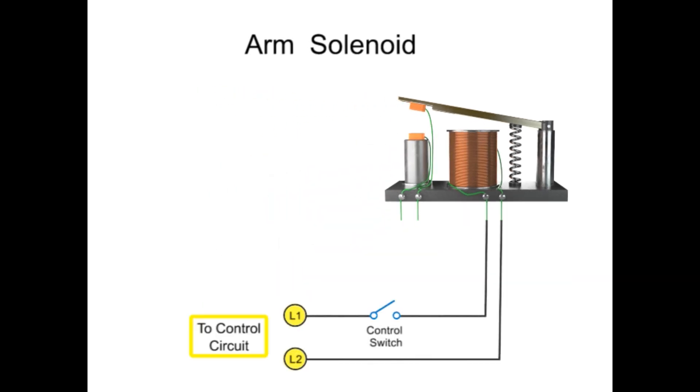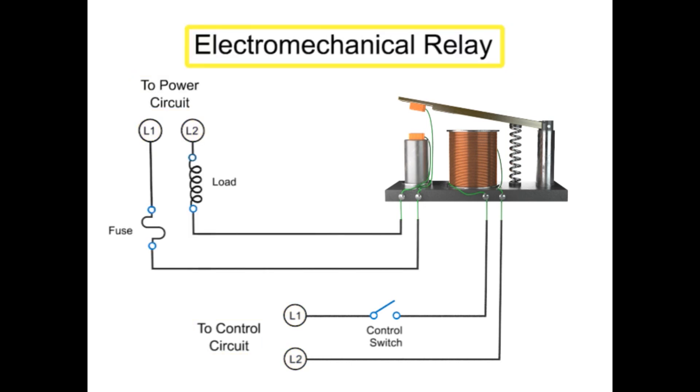When the mechanical armature of a solenoid controls the electrical contacts within another circuit, it is known as an electromechanical relay. Relays are primarily used when it is necessary to isolate a low power switch signal controller from a higher powered circuit, or when several circuits must be controlled by one signal.